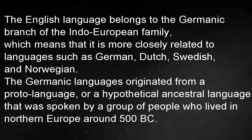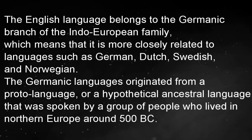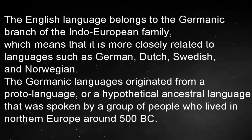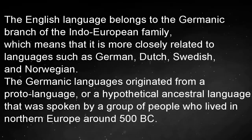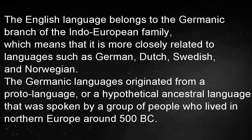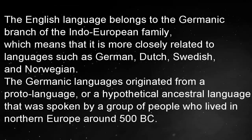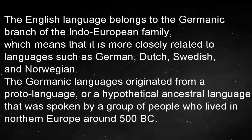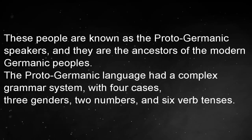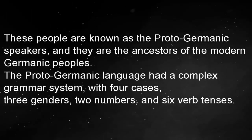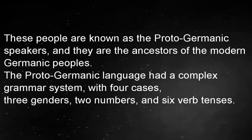The English language belongs to the Germanic branch of the Indo-European family, which means that it is more closely related to languages such as German, Dutch, Swedish, and Norwegian. The Germanic languages originated from a proto-language, or a hypothetical ancestral language, that was spoken by a group of people who lived in Northern Europe around 500 BC. These people are known as the Proto-Germanic speakers, and they are the ancestors of the modern Germanic peoples.